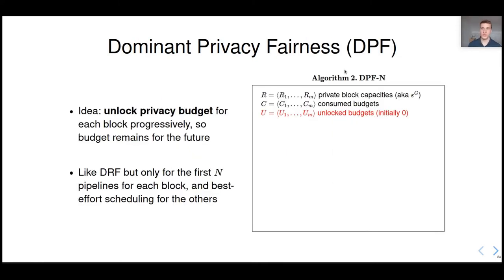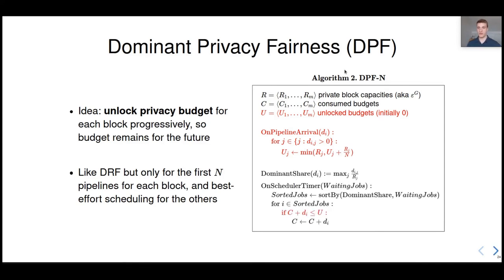This is why we introduced dominant privacy fairness, or DPF. And the main idea of DPF is to unlock privacy budget for each block progressively, to make sure that we always have some budget for the future. So we start with 0 unlocked budget, and every time a pipeline arrives, we unlock 1 over n, a fraction of the remaining budget. So n is a parameter, and it means that once n pipelines arrived in the system, we unlocked all the budget. And then, after that, we're just going to try to do best effort scheduling. Finally, we just run DRF after this modification, with another change here, which is that we can only consume from unlocked budget, instead of consuming from the total budget.